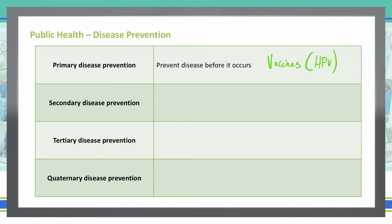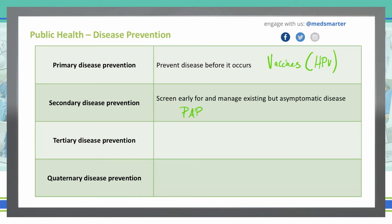With secondary disease prevention, this is where we are screening early for diseases and managing them, usually before they're symptomatic. We do pap smears in females on a regular basis to help screen for cervical cancer. If we find cervical cancer in that pap smear, we can hopefully treat it well before it gets to advanced stages and causes major issues elsewhere.